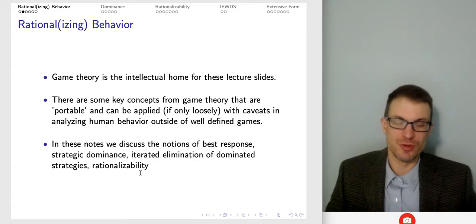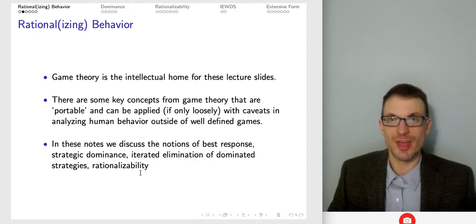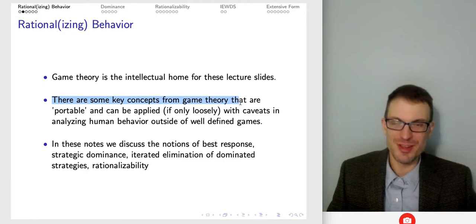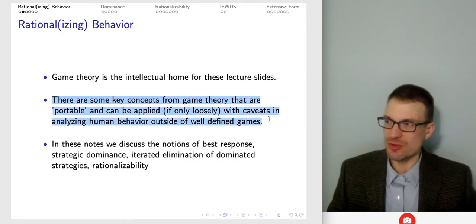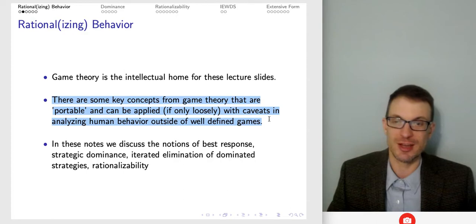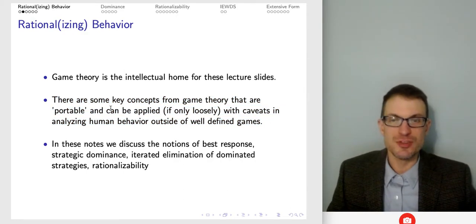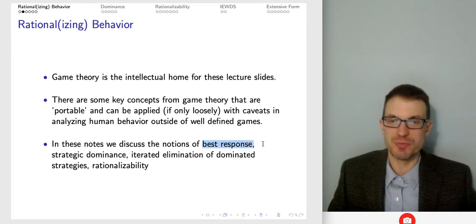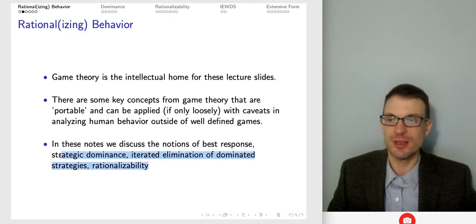Game theory is going to be the home for these slides. There are key concepts from game theory that we can think of as really portable — we can apply them to other areas. That's why this becomes an important foundation for the rest of the Ethics and Economic Behavior course. Here I'm going to think about best response, strategic dominance, iterated elimination of dominated strategies, and rationalizability.